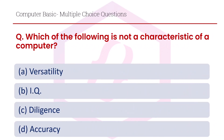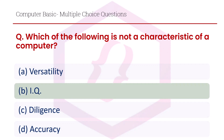Which of the following is not a characteristic of a computer? Option A personality, option B IQ, option C diligence, option D accuracy. The right answer is option B, IQ.